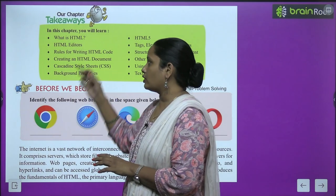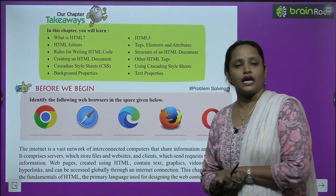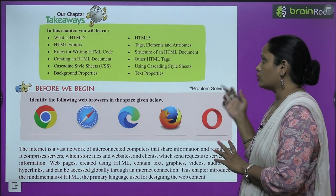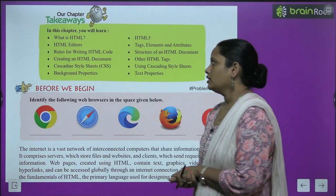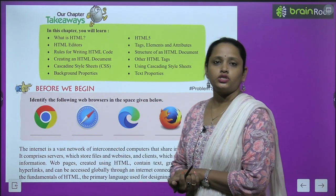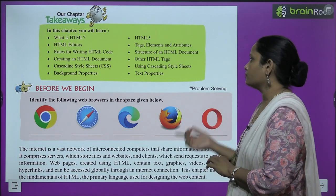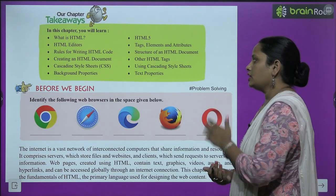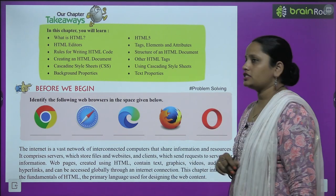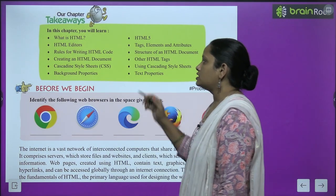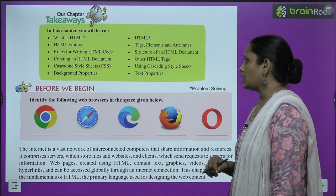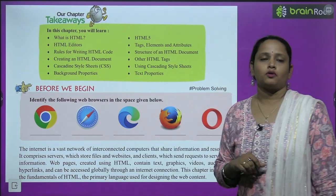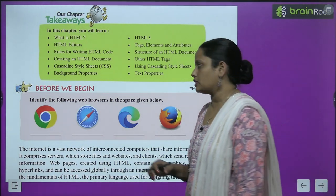The contents we are going to cover: What is HTML, HTML5, HTML editors, tags, elements, attributes, rules for writing HTML code, structure of an HTML document, creating an HTML document, other HTML tags, Cascading Style Sheets which we call CSS, using Cascading Style Sheets, background properties, and text properties. These are the contents we are going to learn in this chapter.